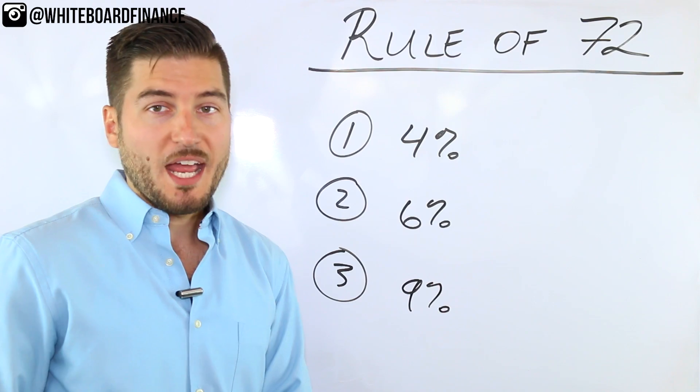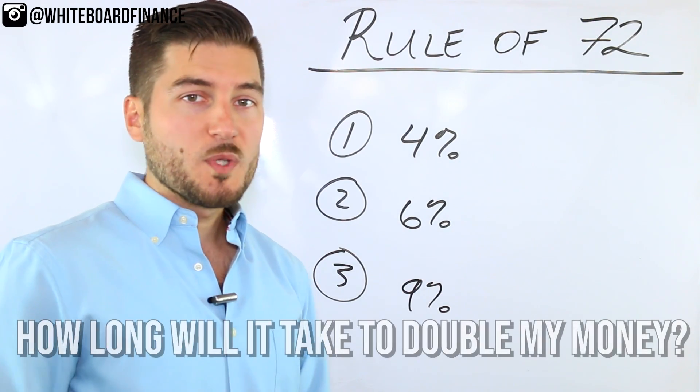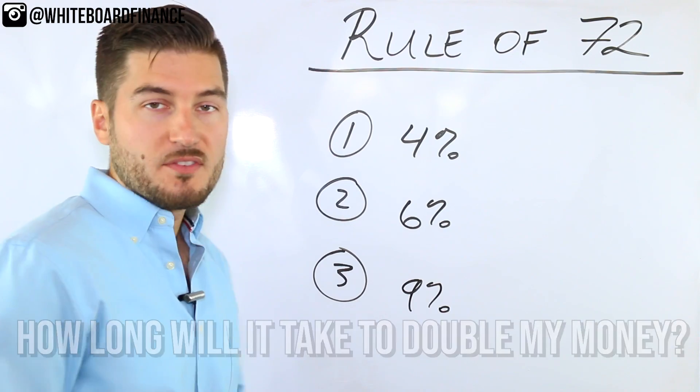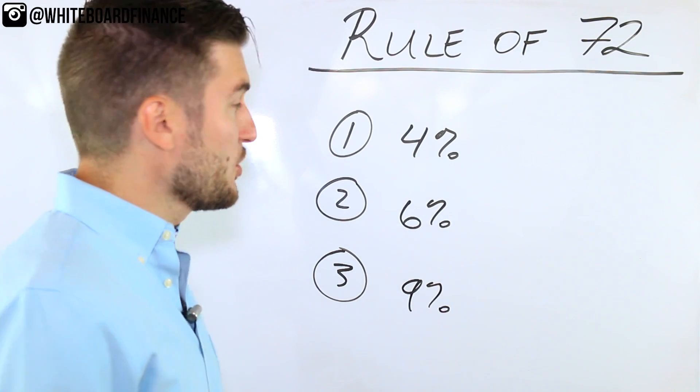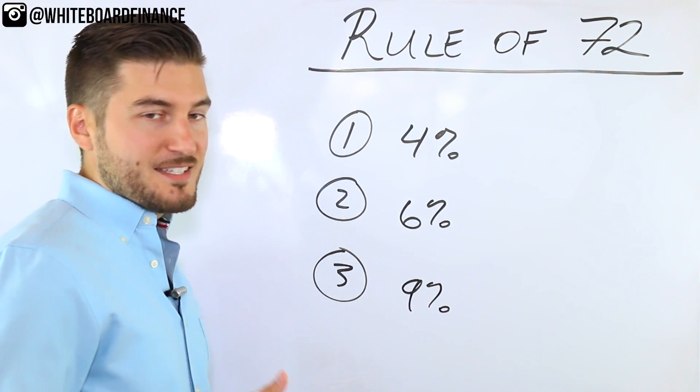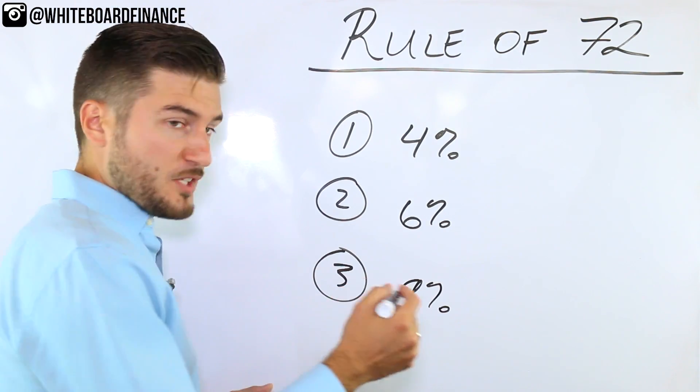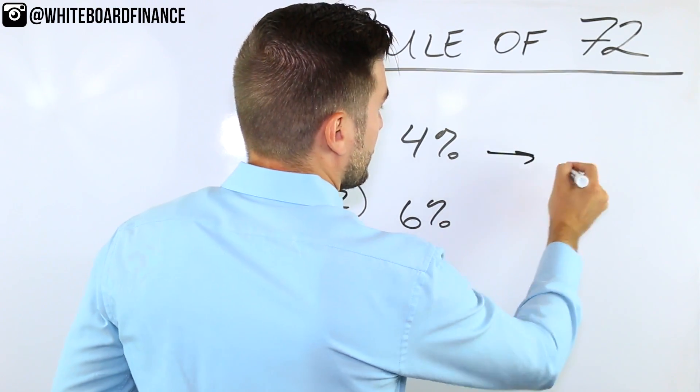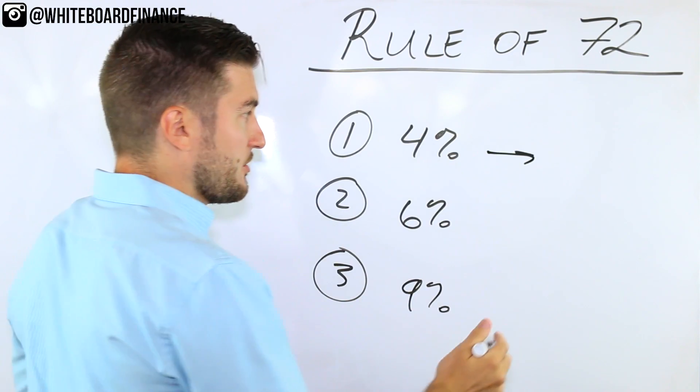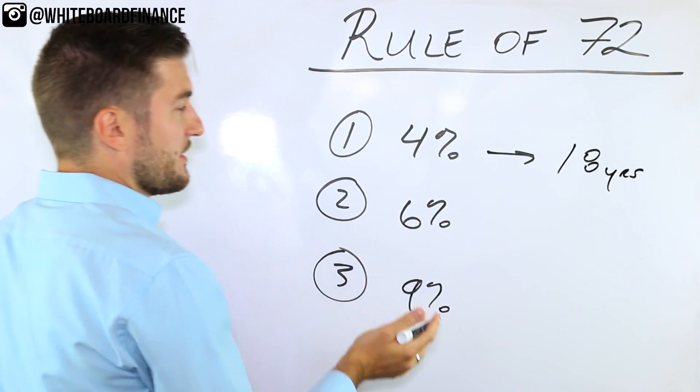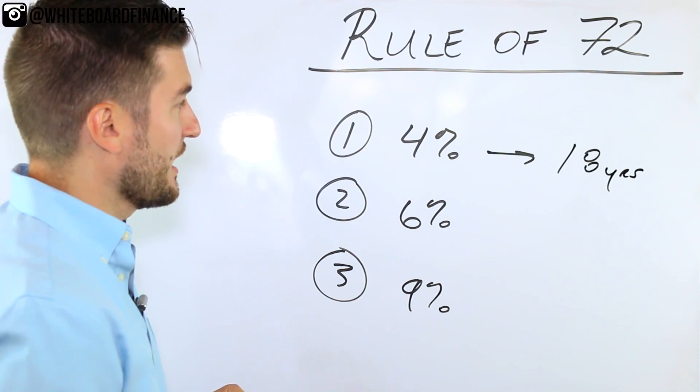A fair question to ask would be, how long would it take to double my money if I were to put my money in all three of these investments? So I'll actually tell you right now. So obviously, 9% is the best, but here's a chronological time frame. So at 4%, and these are real numbers, these are not hypothetical numbers, it would take you 18 years to double your investment if it was compounded annually.